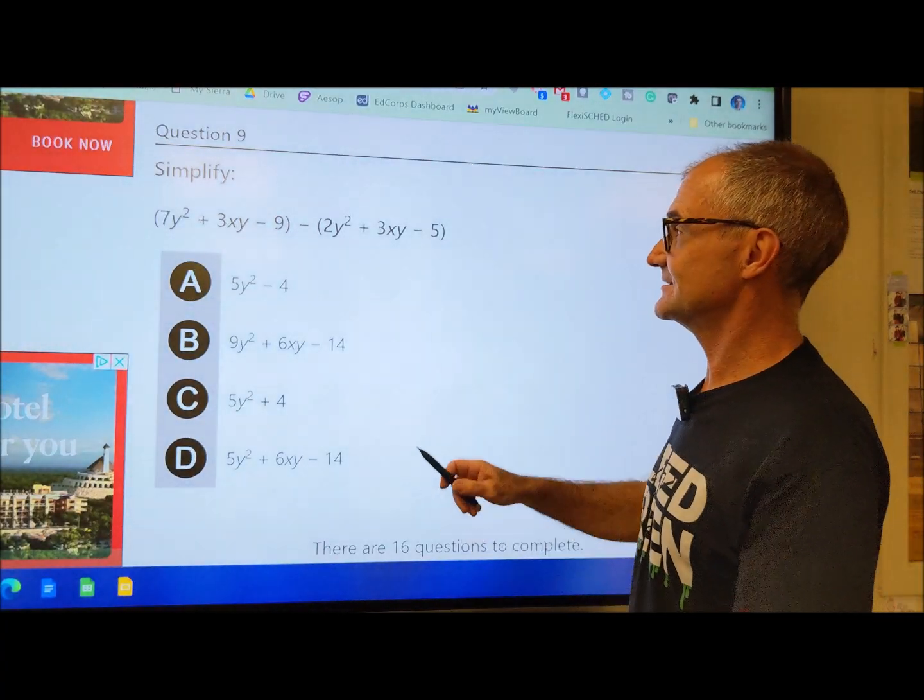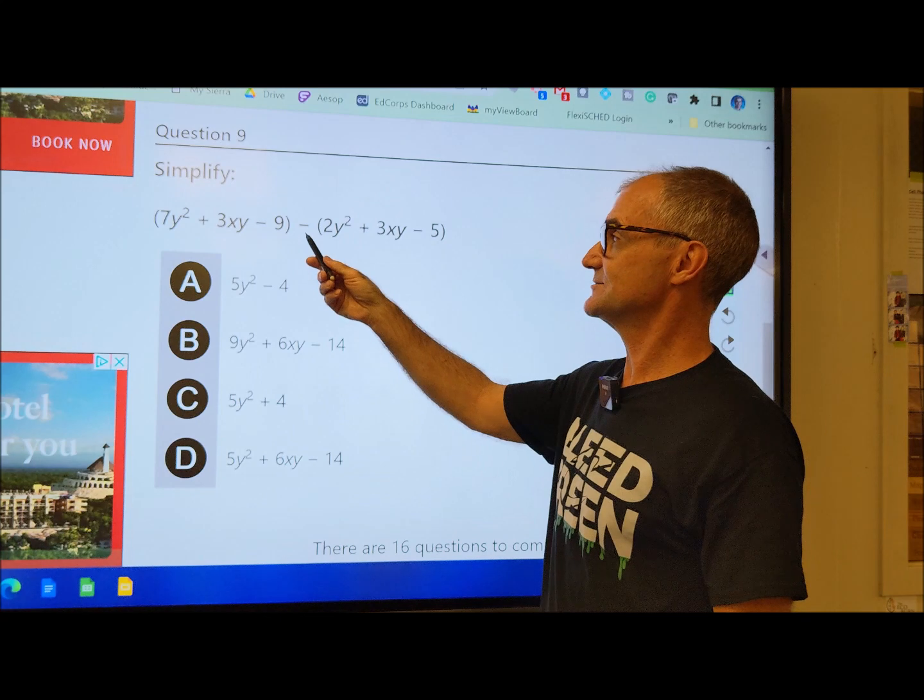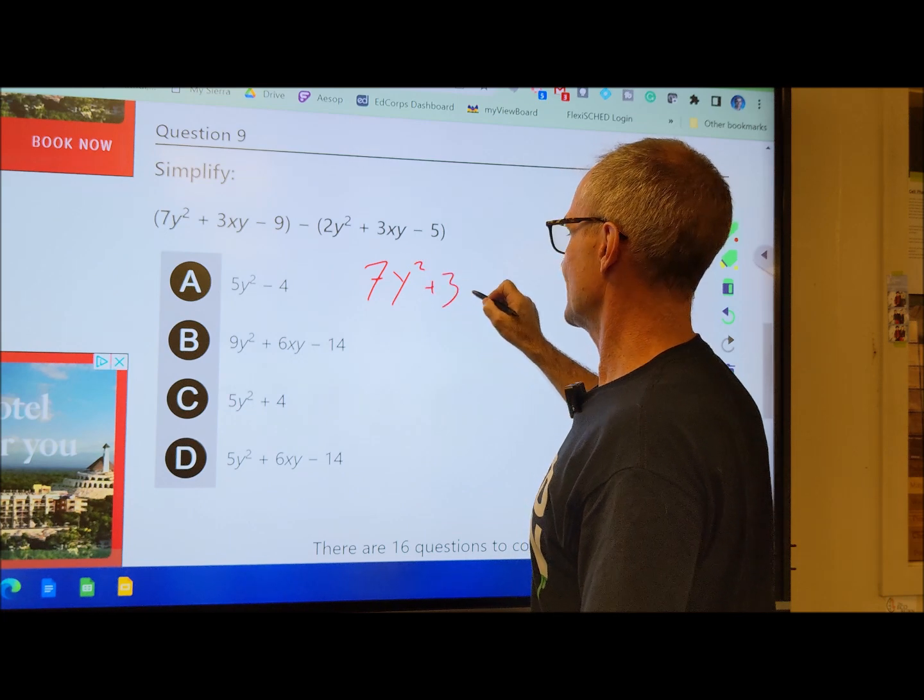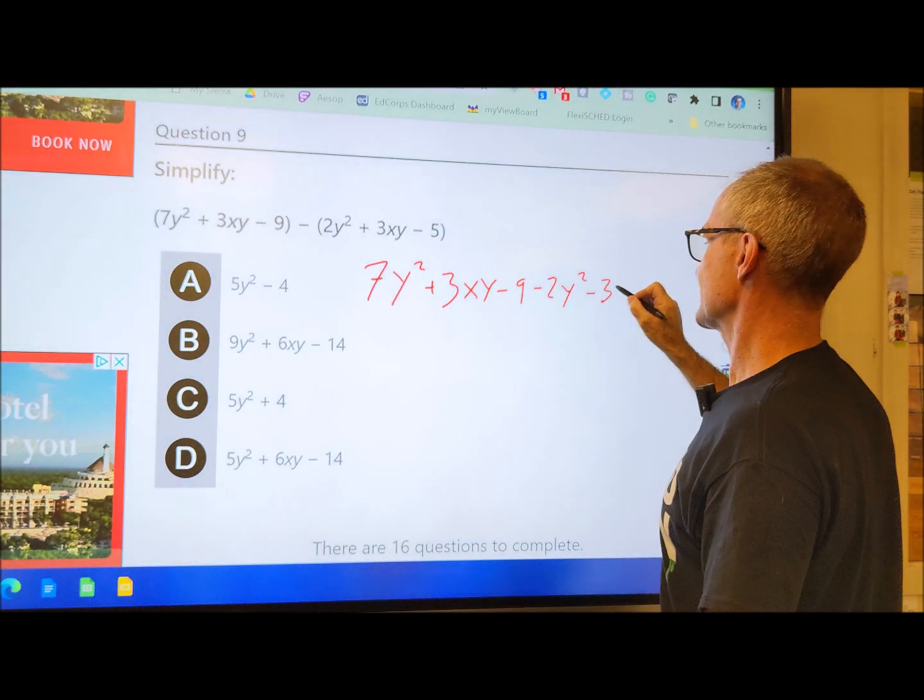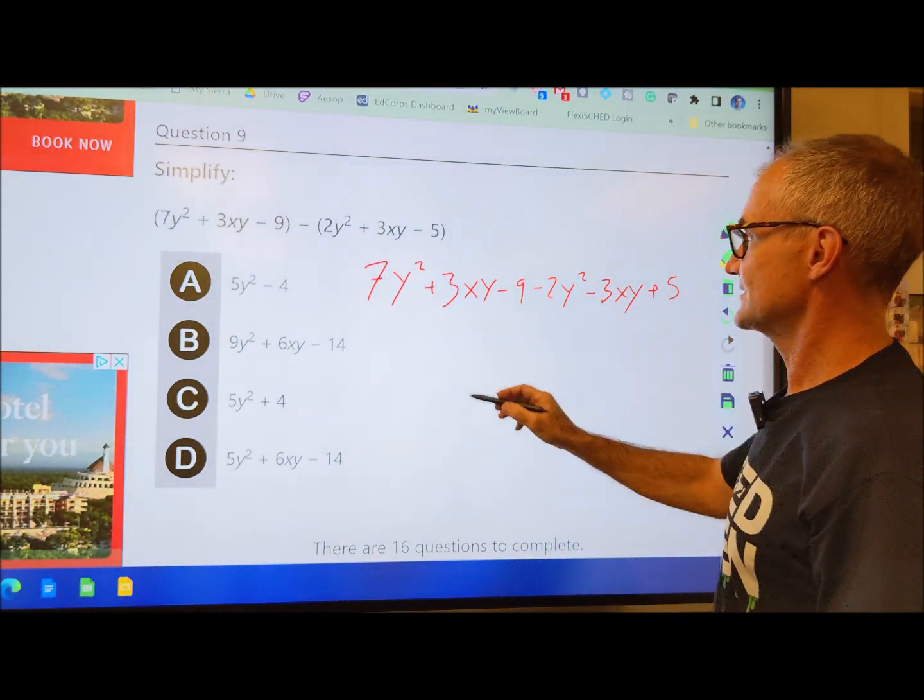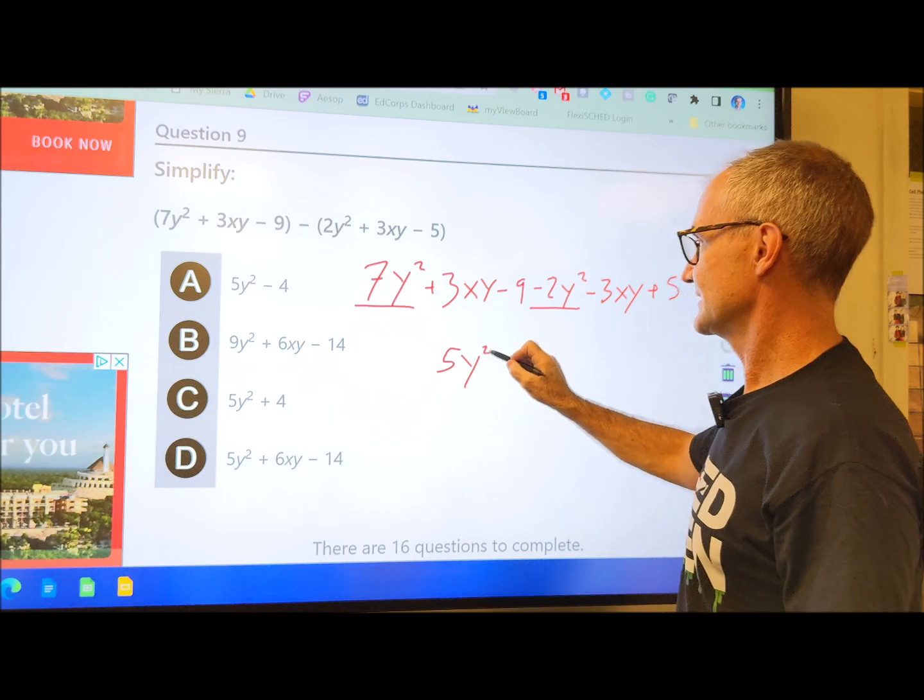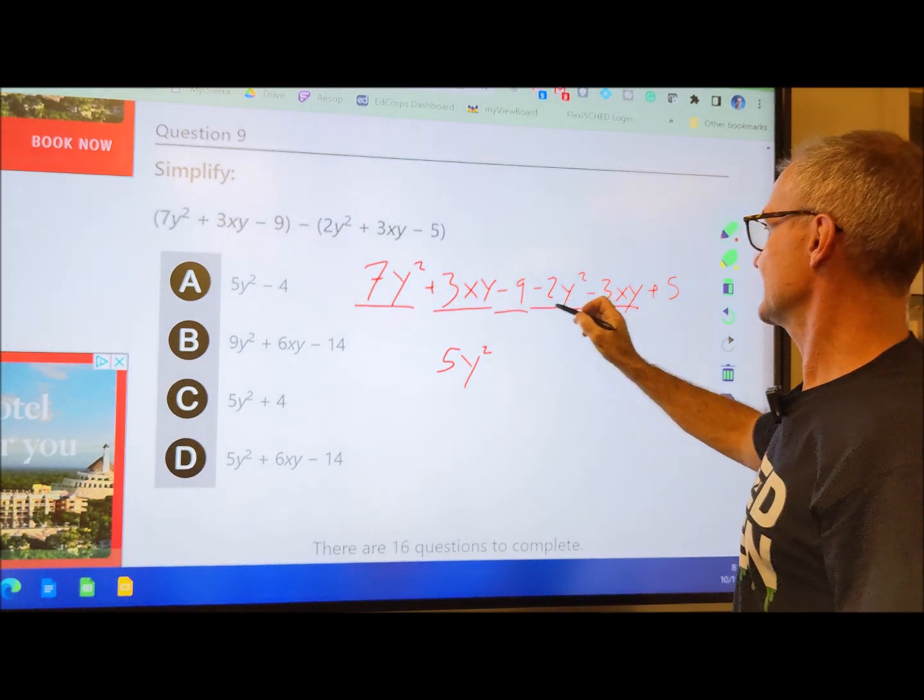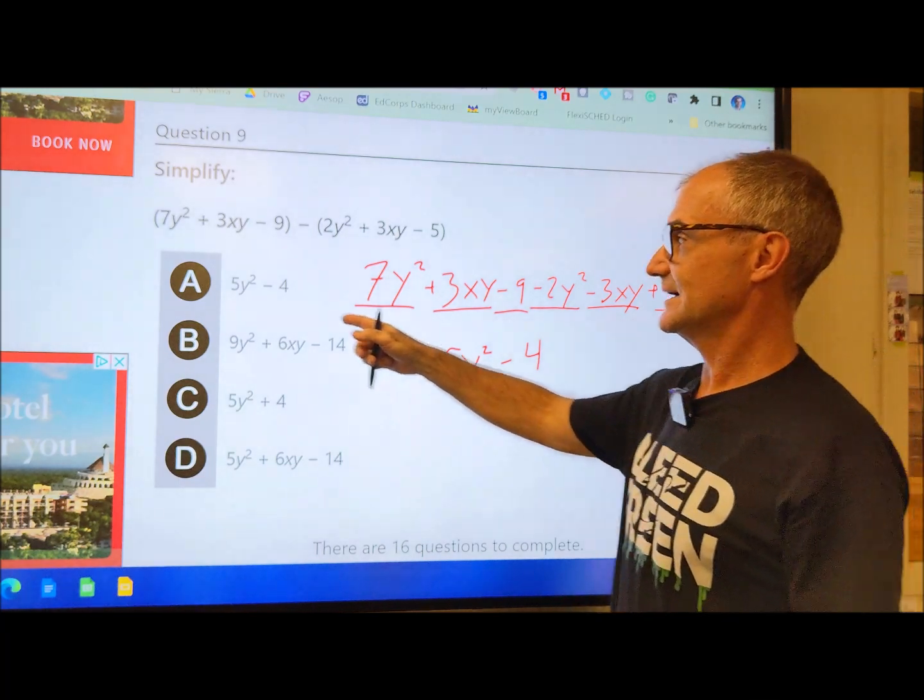Number 9 is kind of intimidating and it looks like a lot of things, but it's really just simplifying and combining similar terms. The one tricky part on this is to distribute that negative through the whole quantity. So I have 7y squared plus 3xy minus 9 minus 2y squared minus 3xy plus 5. I can only combine similar terms. So I have 7y squared and negative 2y squared, which will give me 5y squared. Then I have 3xy minus 3xy, those will cancel each other out. Minus 9 plus 5 is minus 4. I can't simplify any further than that, and it's going to be answer A.